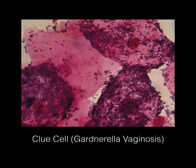These are clue cells, which are seen in Gardnerella vaginosis. Basically it's an epithelial cell that's coated with the pathogen.